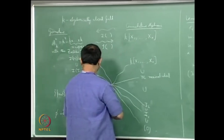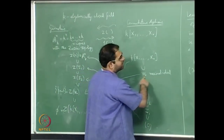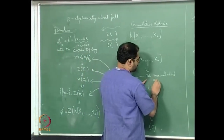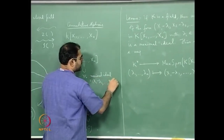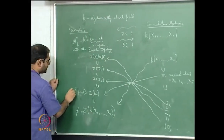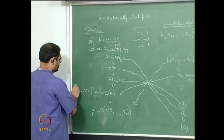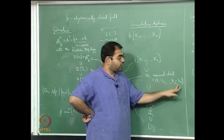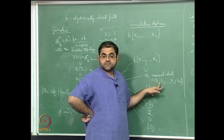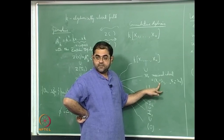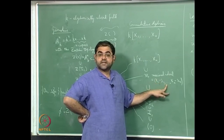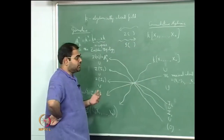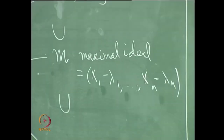The moral is: if you take a maximal ideal of the form (x1-λ1,...,xn-λn), the corresponding point you get is just (λ1,...,λn). This is the single point you get because the common zero of all these polynomials must satisfy that the i-th coordinate equals λi. So it is clear that a maximal ideal like this corresponds to precisely this point.